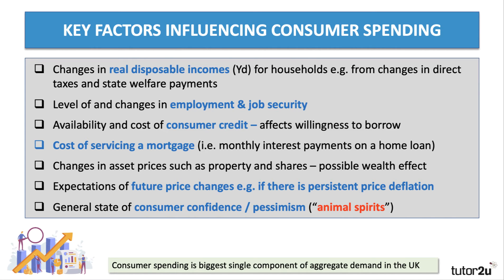Three other factors. Changes in asset prices are perceived by some economists to have a potentially significant effect — so the value of your property, and the amount of equity you have in your home. Equity is the difference between the market value of your house and the existing mortgage you have left to pay. Do share prices have an effect? If share prices go up, does that allow more people to spend because of a positive wealth effect? These are not certain factors, but there's often a link.